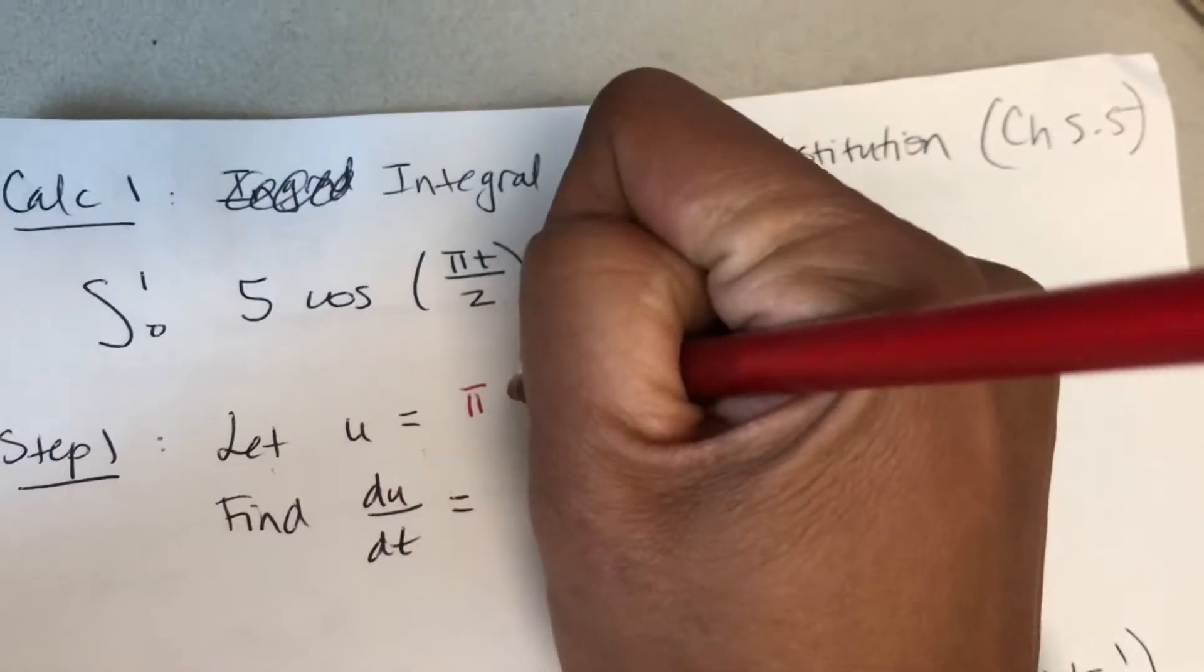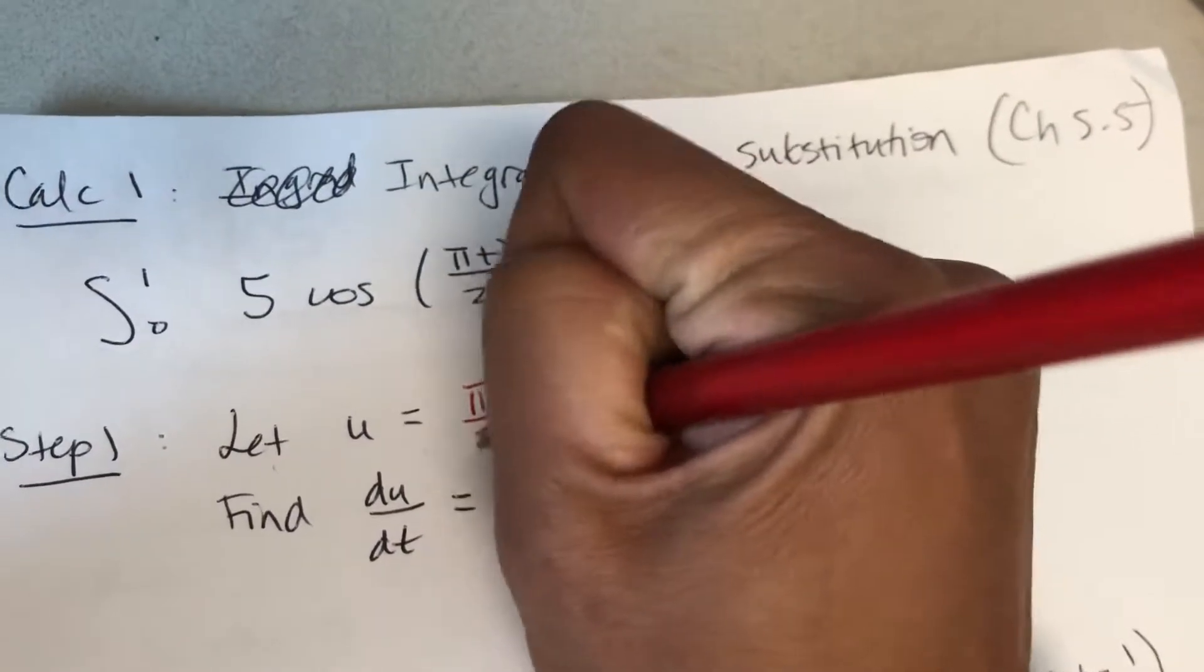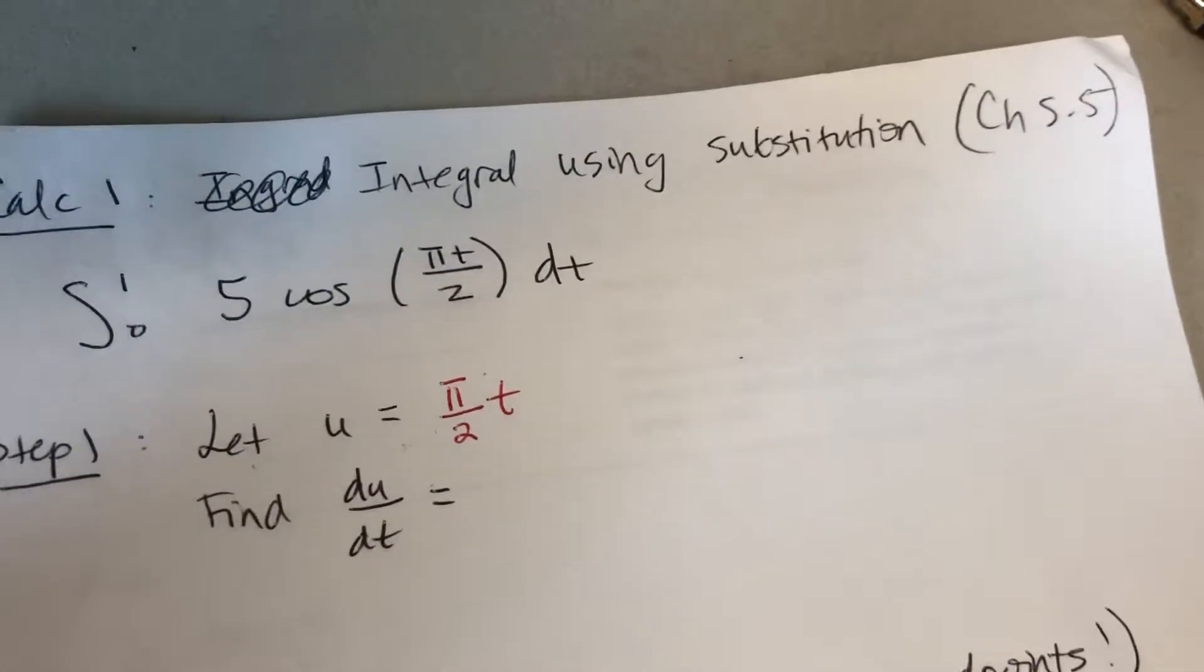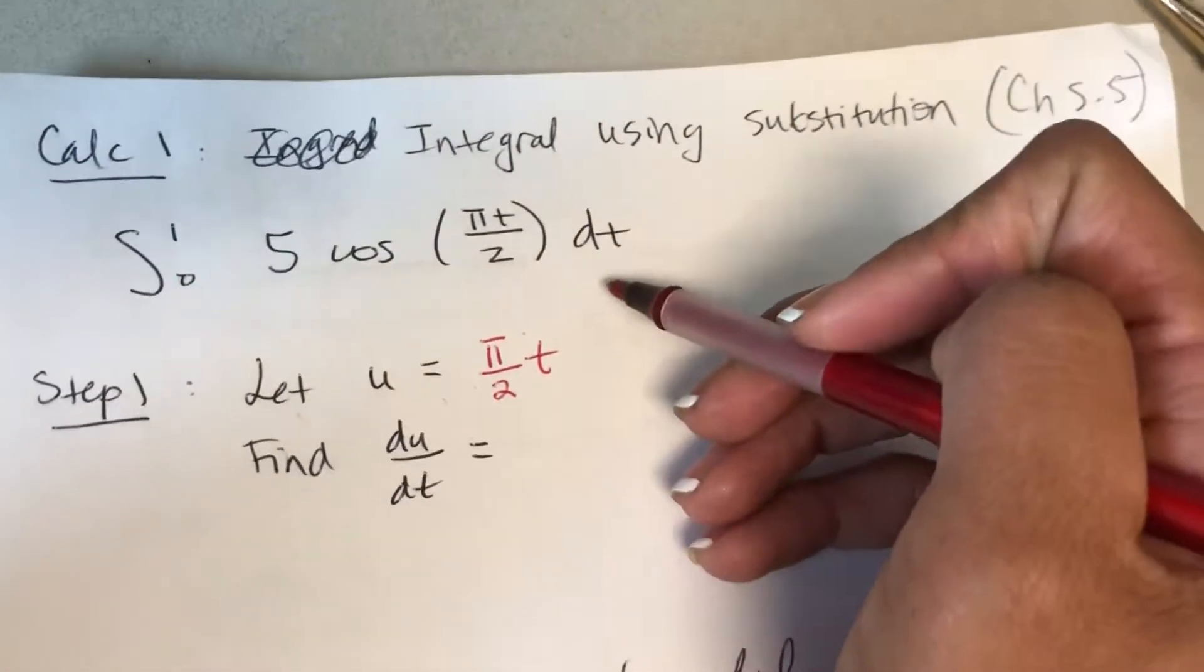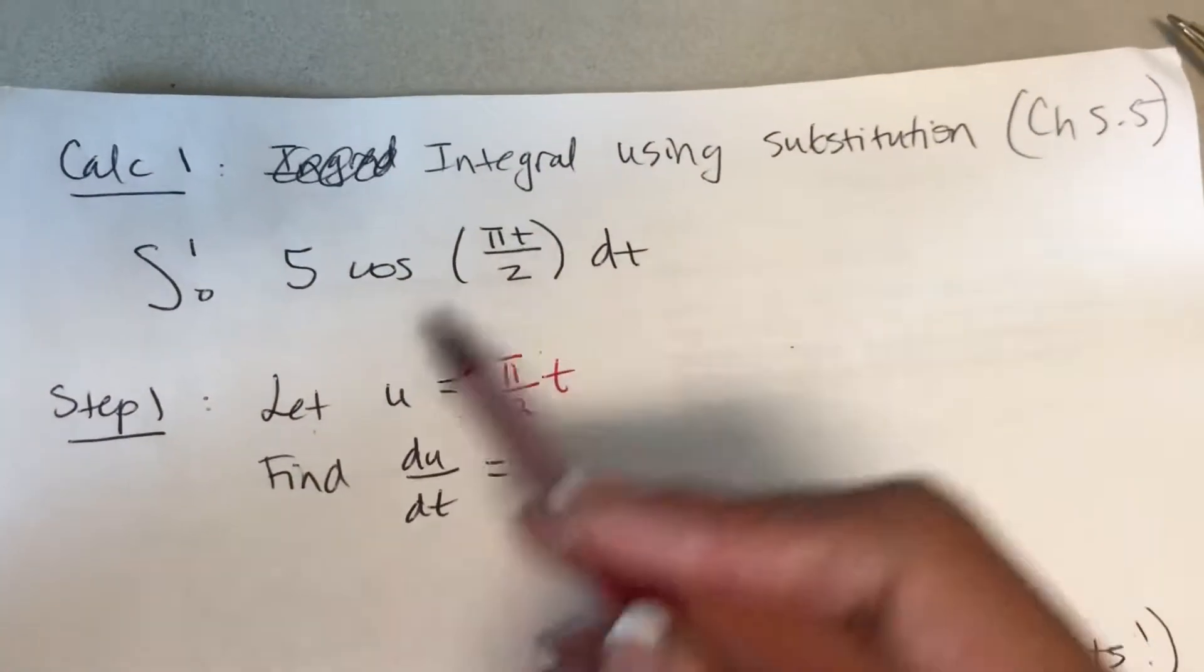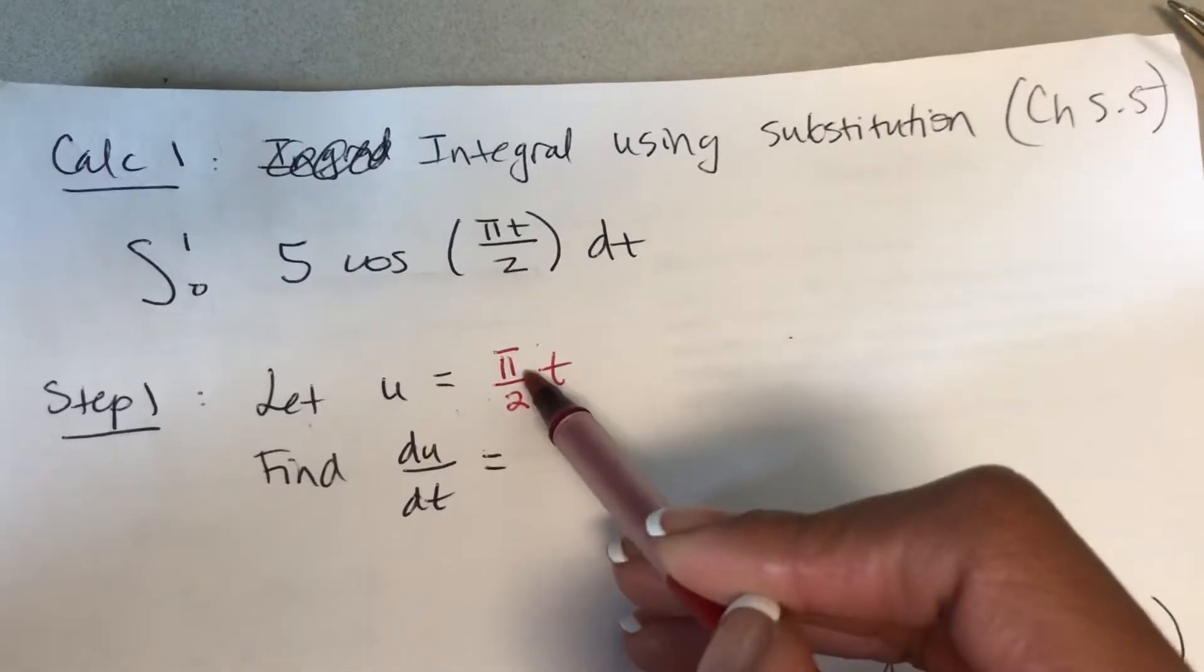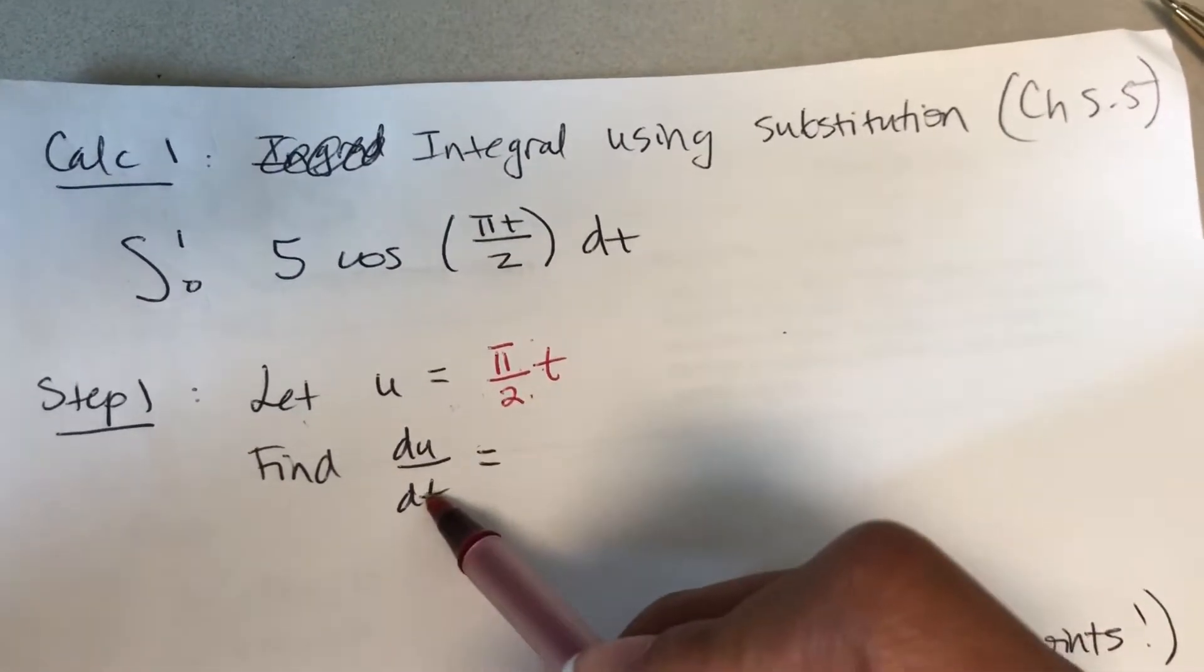So I let u equal to pi over 2t. This part right here, and notice this t is instead of x, so don't be afraid if it's a different variable. Once you let u equal to something, you always want to find the derivative of it.